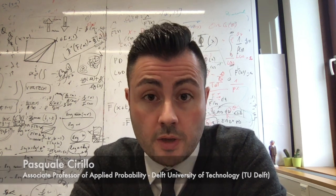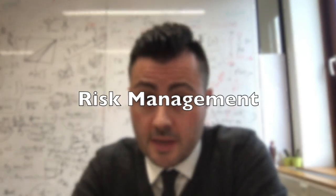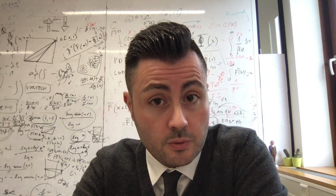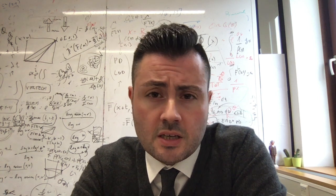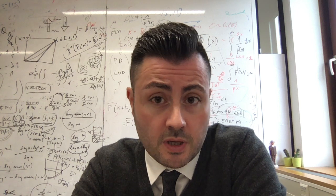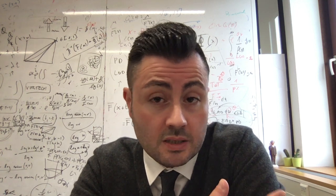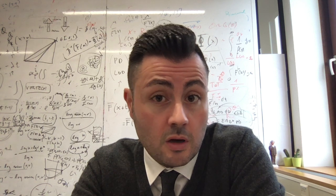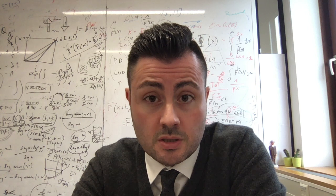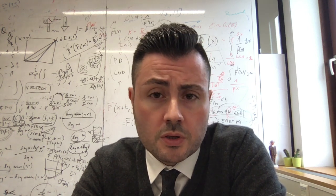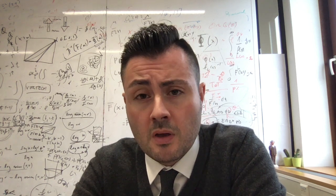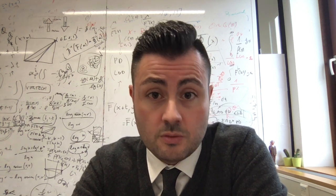Hi there, welcome back. Today we introduce backtesting. Backtesting is a validation procedure which is very used in risk management and is essentially a simple idea. It's the idea of using past observations, so observations from data sets that we have collected in the past, to validate the different risk measures that we have computed. What we will consider together is the backtesting of Value at Risk, but the idea can be extended to other risk measures.